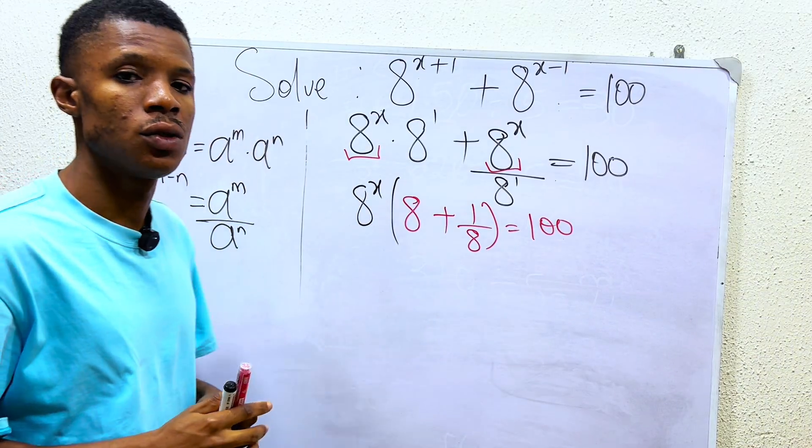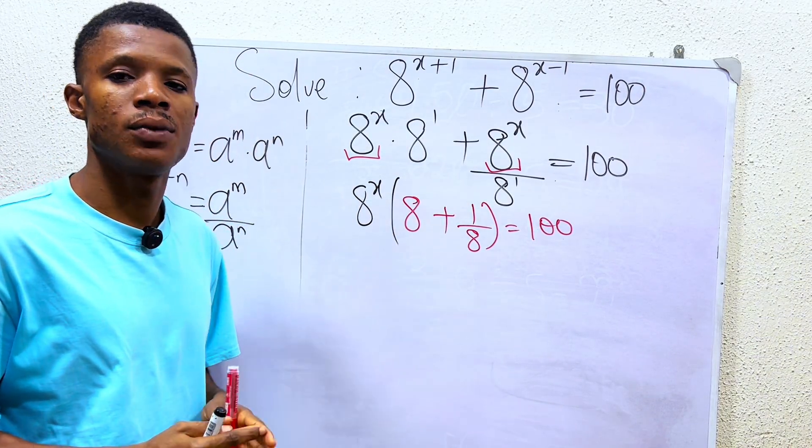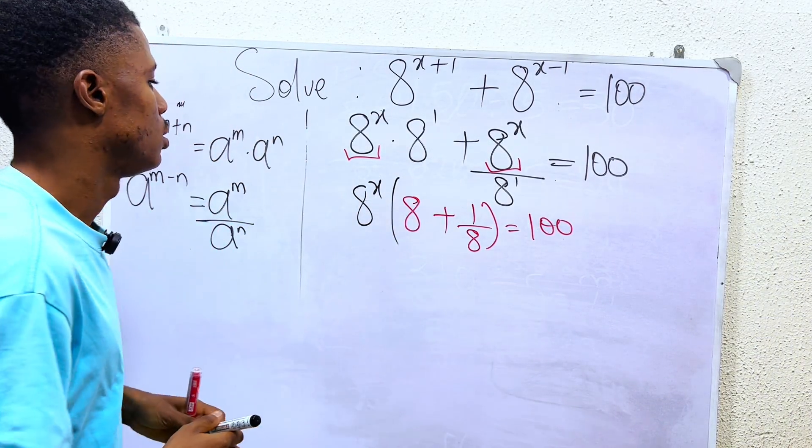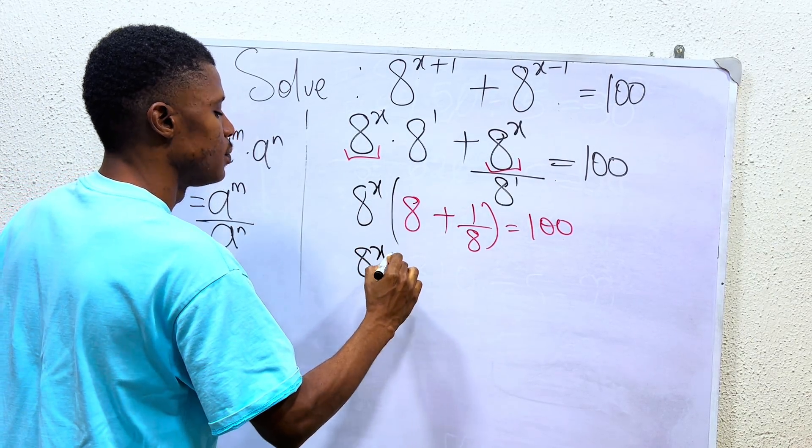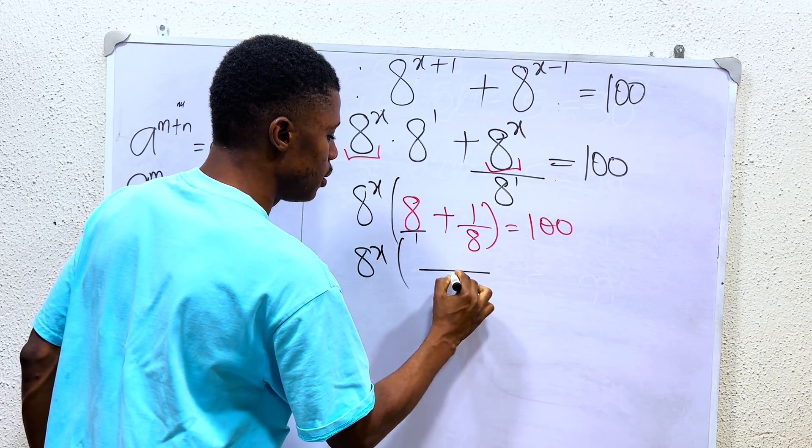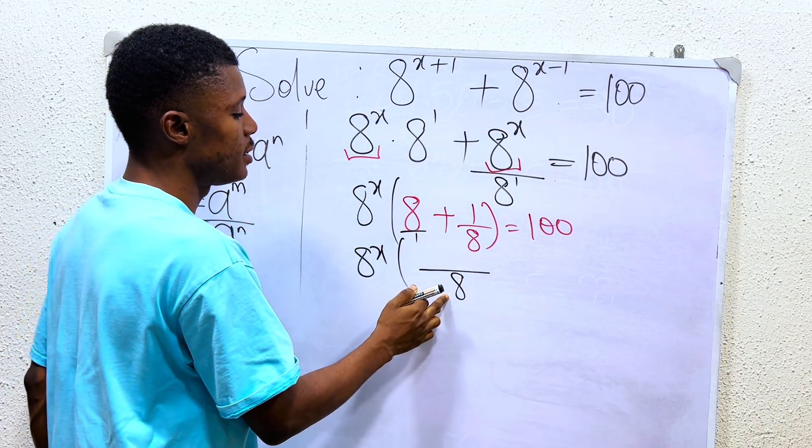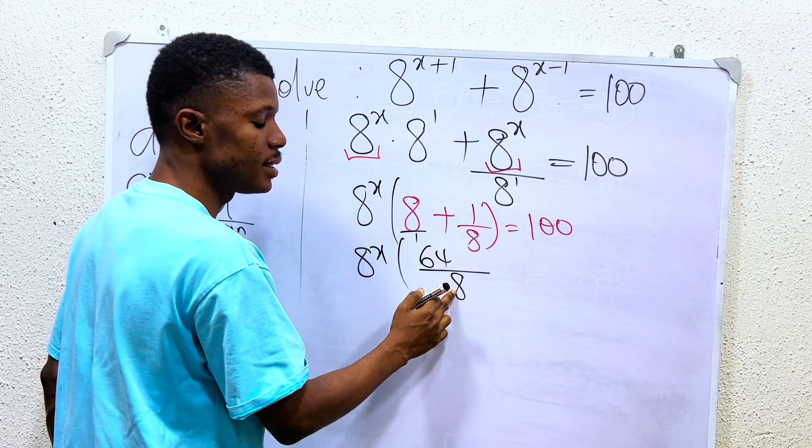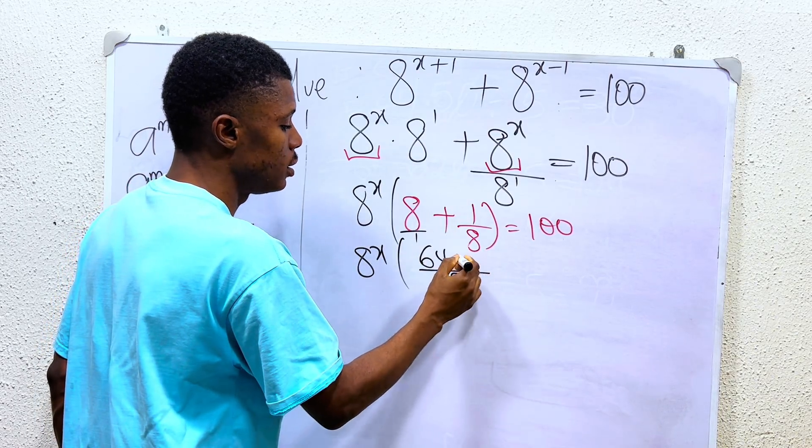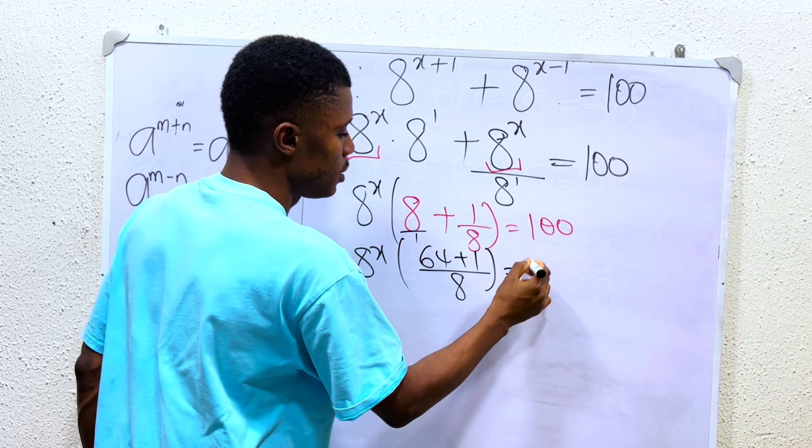Then, the next thing I have to do is simple, to add the term in the brackets. So what do I do? 8 power of x into 1 over 1, a common denominator of 8. 1 divided by 8 is 8. 8 times 8 is 64. 8 divided by 8 is 1. 1 times 1 is plus 1, and that's 100.